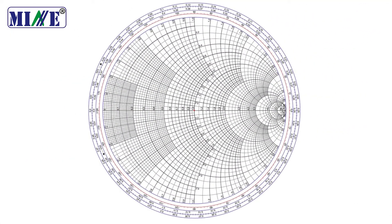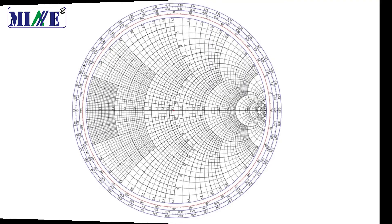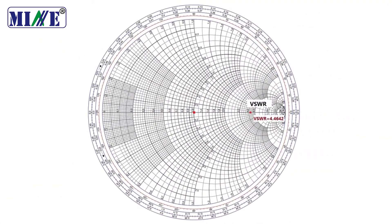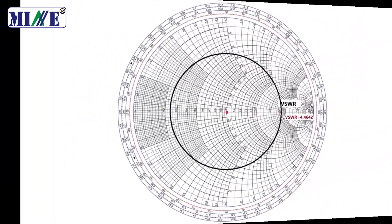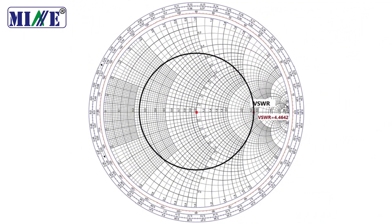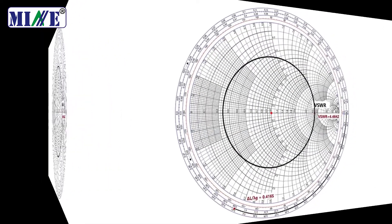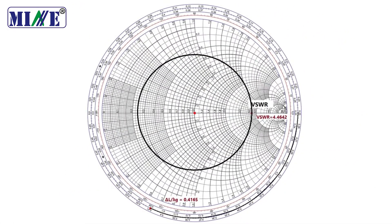Draw the Smith chart with the help of the measured values. First, tick mark the VSWR on the chart and draw the circle. Second, tick mark the delta-L over lambda-G point on the chart.